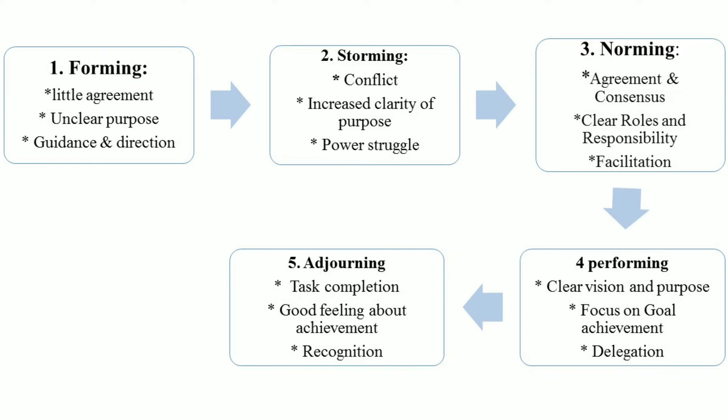The third stage is norming, where agreement and consensus are reached; members are clear about their roles and responsibilities, and there is facilitation. The fourth stage is performing, where members have a clear vision and purpose, focus on goal achievement, and delegation. The fifth and last stage is adjourning, where task completion happens, members feel a sense of achievement, and recognition is given.